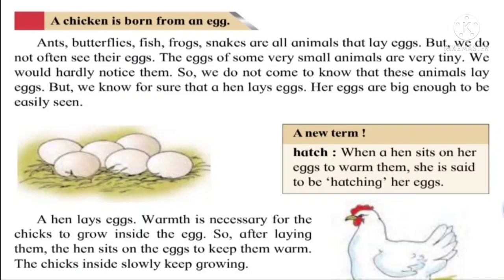I am sure that you have seen an egg of a hen. Now some eggs of animals are huge — that is they are big — some are small, whereas others are very tiny. A hen lays eggs and they are quite big enough that you can see them easily and clearly.